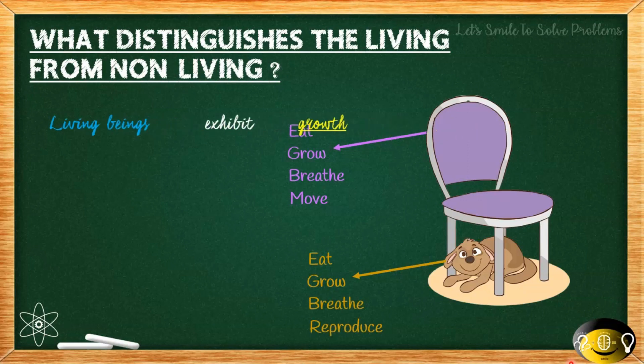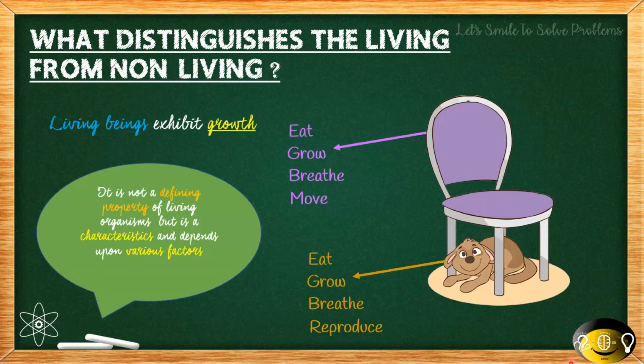In simpler terms, living beings exhibit growth and have certain characteristics. However, these characteristics depend upon various factors — it is not a single defining property of a living organism, but rather a set of characteristics that depend on various factors.